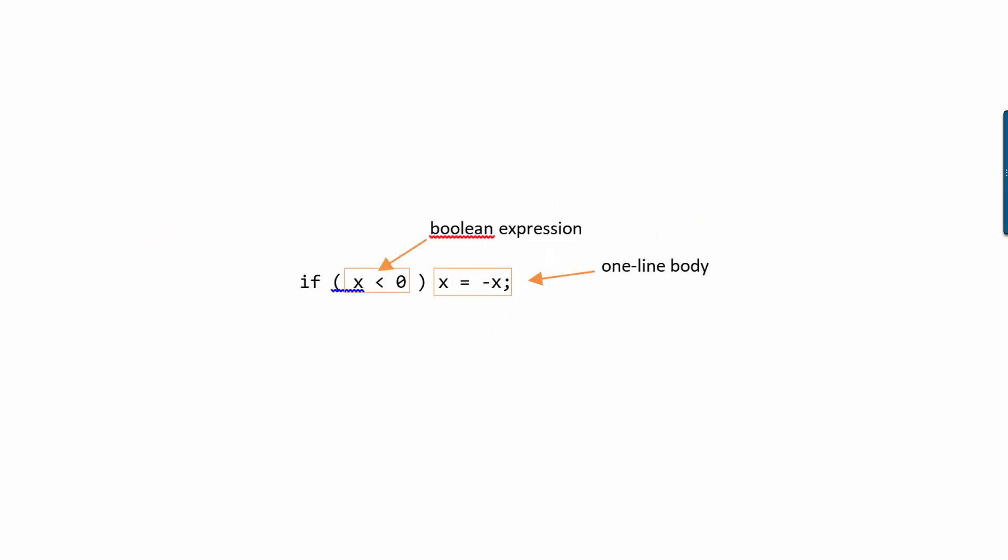Something else that you might see in other people's code is a one-line body for an if statement, which is valid syntax. So here I can say if x is smaller than zero, then replace x with the opposite of x. We won't be doing this in our class and if you do this in our class, I'm going to tell you not to because according to our style guide,